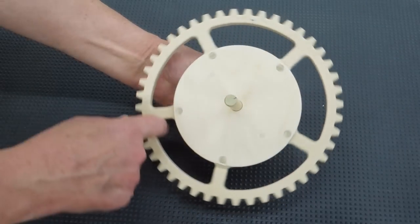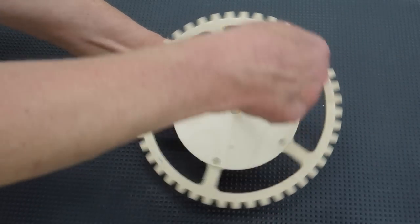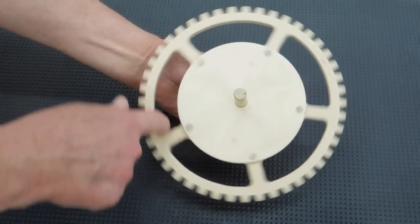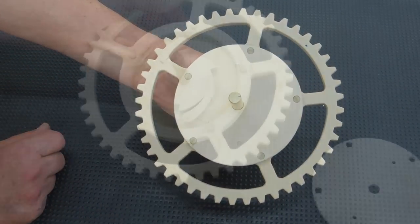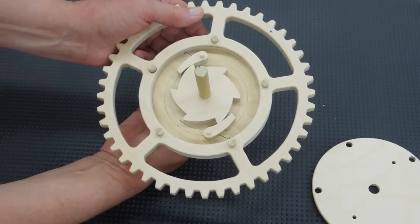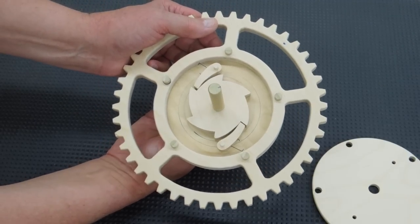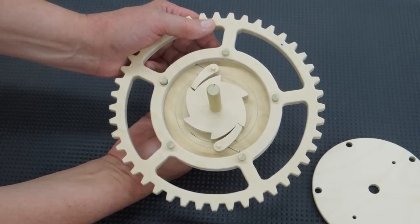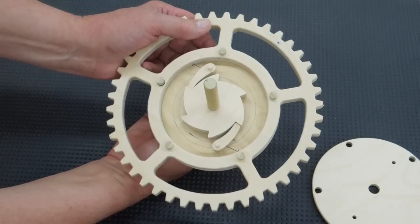The gear will freewheel in one direction and it will drive the shaft in the other. Being a prototype, I'm not yet sure which direction I want this ratchet to work. Right now this allows the ratchet to freewheel counterclockwise and engage clockwise.